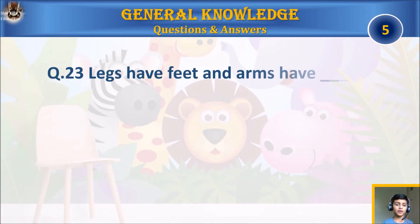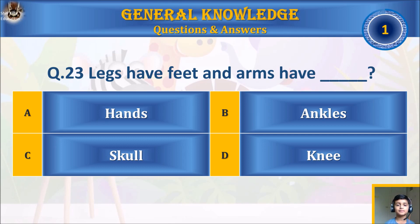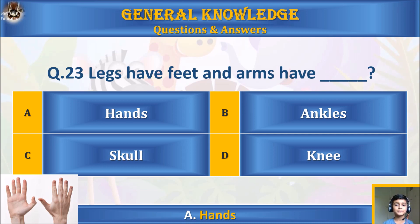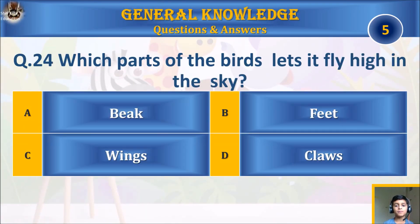Question twenty-three: legs have feet and arms have: A) hands, B) ankles, C) skull, or D) knee? Your time starts. The answer is A) hands.